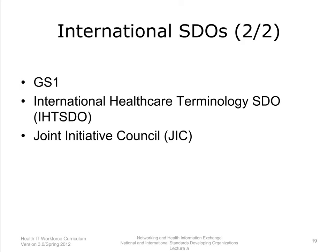Other international SDOs include GS1, International Healthcare Terminology SDO IHTSDO, and Joint Initiative Council, JIC. GS1 is a large international standards group best known for its barcoding standards and supply chain identifiers. IHTSDO is an international organization whose primary product is a terminology known as SNOMED-CT. The Joint Initiative Council, JIC, is a collaborative organization that brings many of these international organizations together.